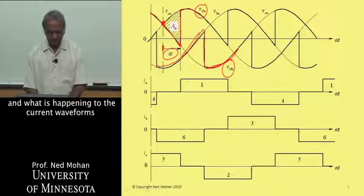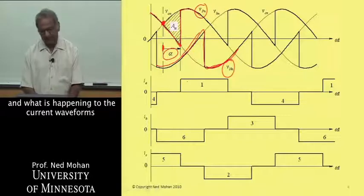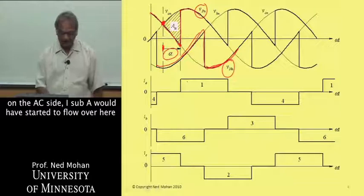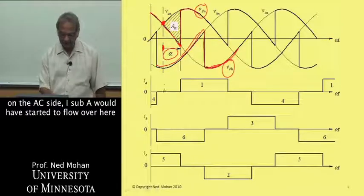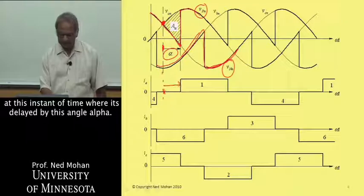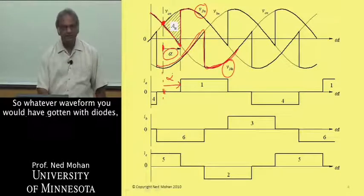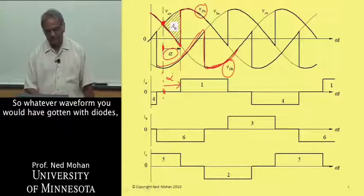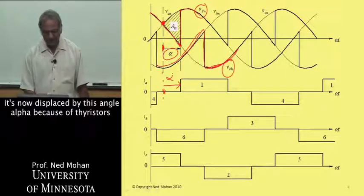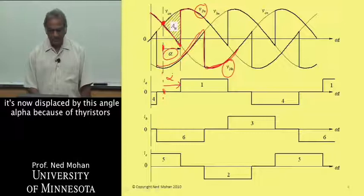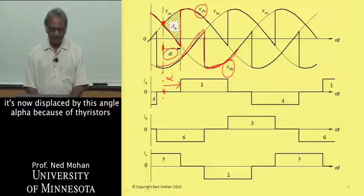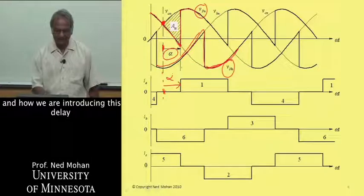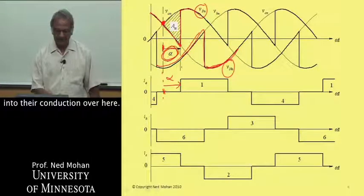What is happening to the current waveforms on the AC side, I sub A would have started to flow over here at this instant of time, where it's delayed by this angle alpha. So whatever waveform we would have gotten with diodes is now displaced by this angle alpha because of thyristors and how we are introducing this delay into their conduction.